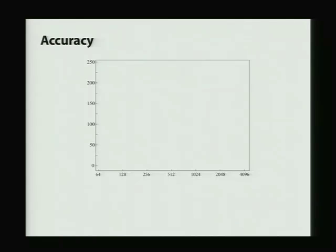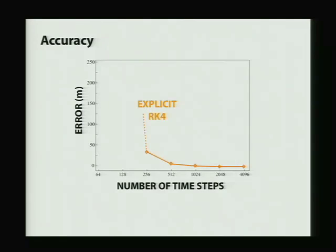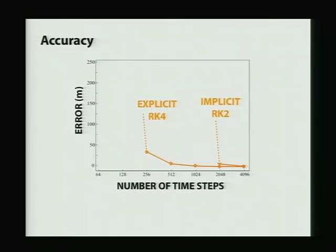What about a more quantitative look at accuracy? Here we plot the error on the left versus the number of time steps in a given duration of simulation on the bottom. With explicit methods, we might blow up — we might have a huge amount of error because we're not staying close to the true trajectory of the system. Implicit methods should do better, but we have issues with Newton solvers failing to converge and so on. With our Lie group integrator, we do quite well, especially when taking really big time steps.